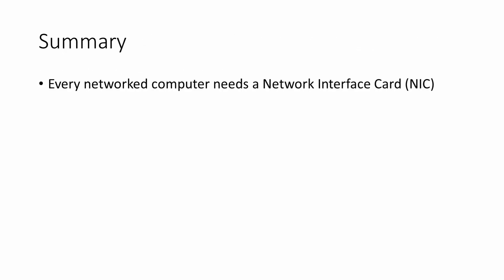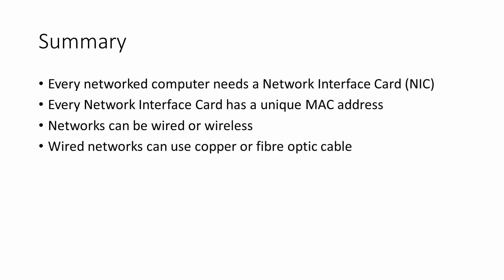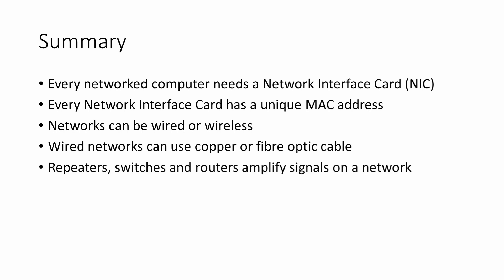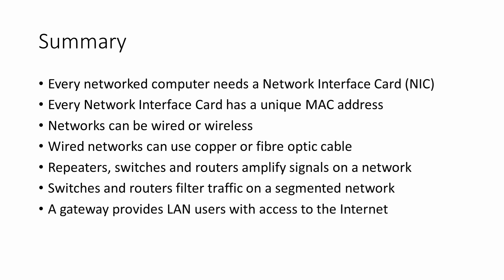To summarise: every networked computer needs a network interface card, and every network interface card has a unique MAC address. Networks can be wired or wireless. Wired networks use copper or fibre optic cable. Repeaters, switchers and routers amplify signals on a network. Switchers and routers filter the traffic on a segmented network, helping to improve performance. And a gateway provides LAN users with access to the internet.